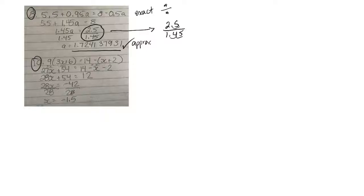But you can't multiply the top by something and the bottom by something else. So I'm going to multiply both the top and the bottom by 100 so I can get rid of the decimal on the bottom. So on the bottom, I'll have 145, whereas on the top, I'll have 250.